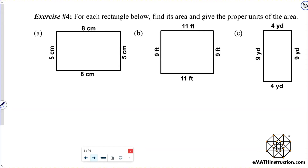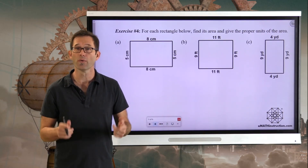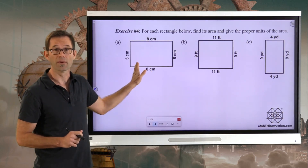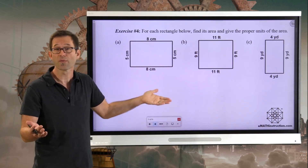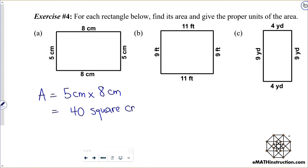Exercise number four: for each rectangle below, find its area and give the proper units of the area. Let's do problem A together, then you can do problems B and C on your own. In letter A, we've got a rectangle that is five centimeters by eight centimeters. The area is simply five centimeters times eight centimeters, which is going to be 40 square centimeters.